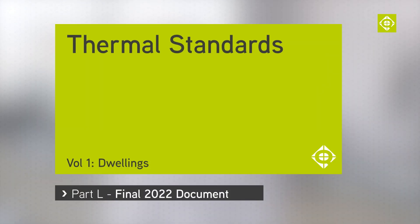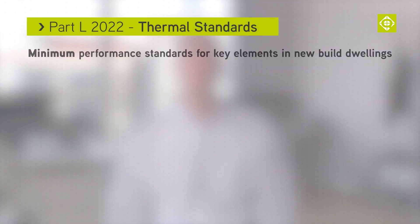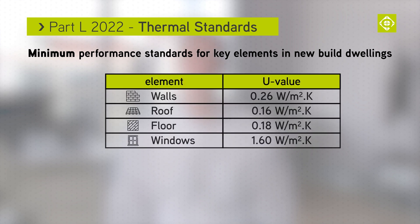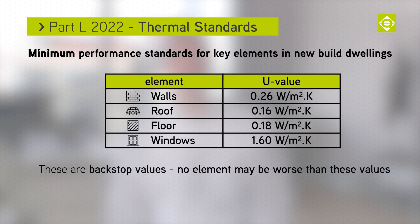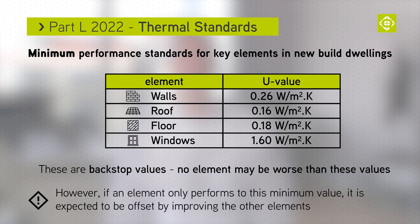The 2022 Part L Volume 1 improves the minimum performance standards for new build homes, shown on screen now. These standards are backstop U-values and must not be exceeded for new build dwellings. However, if one element only hits this minimum value, it is expected that you offset this by improving the other elements.